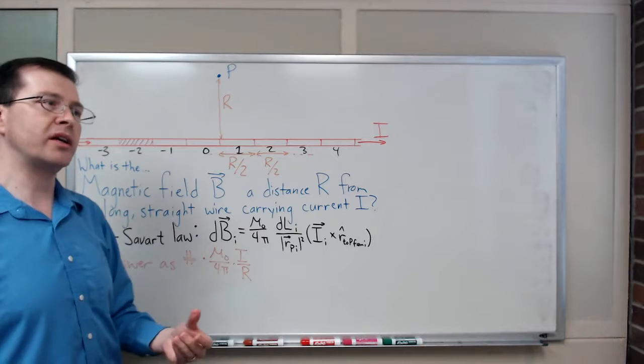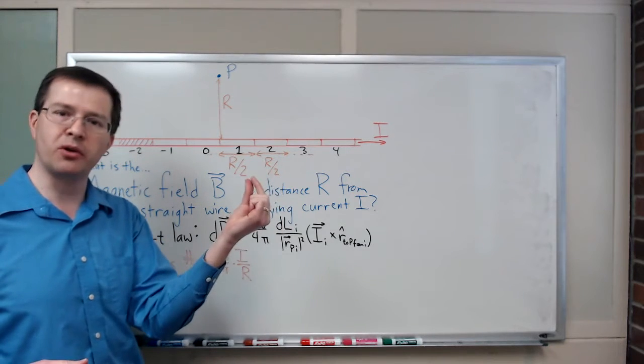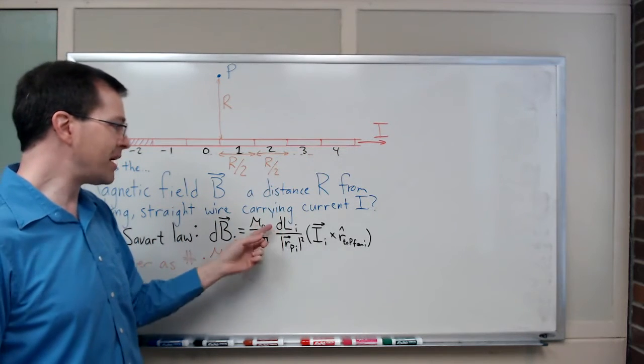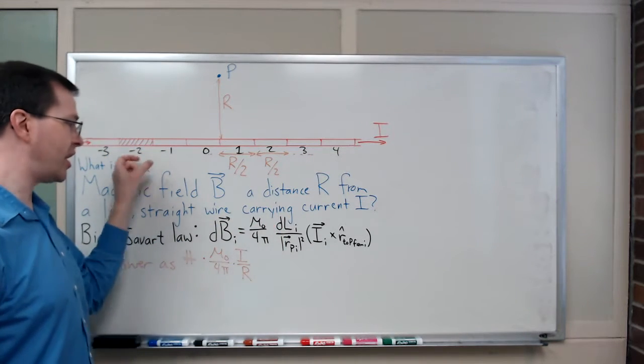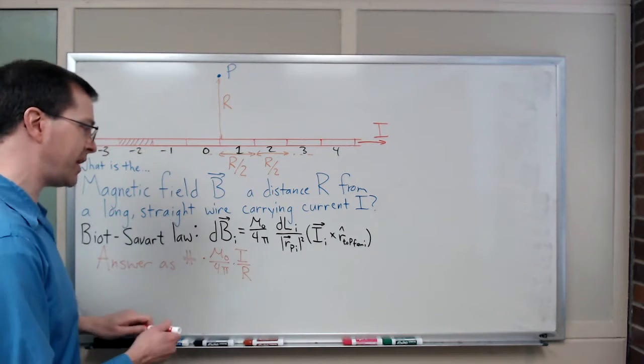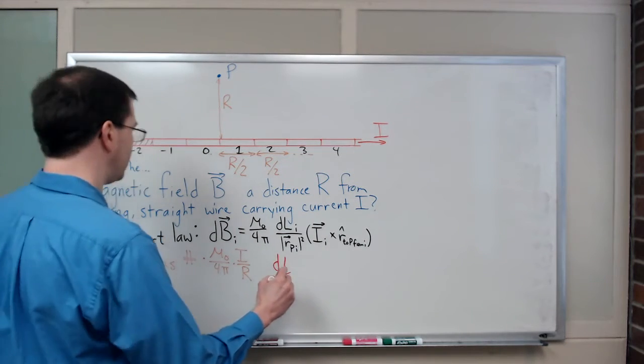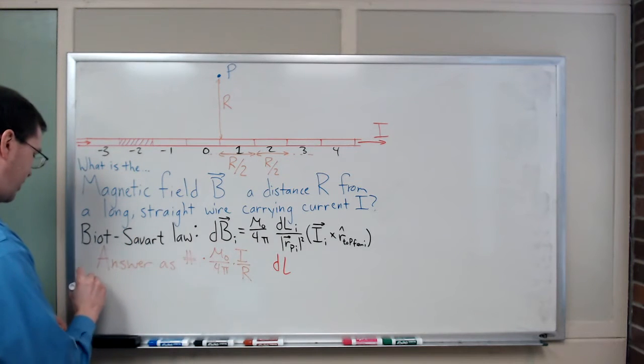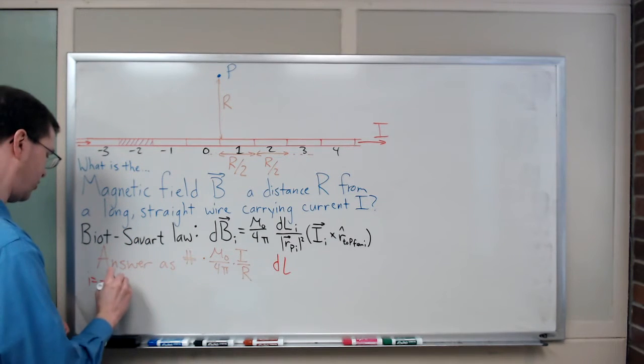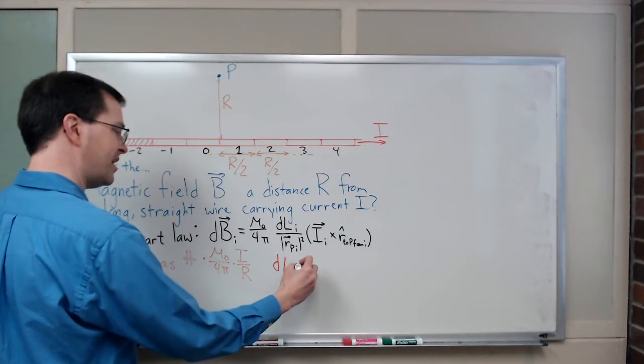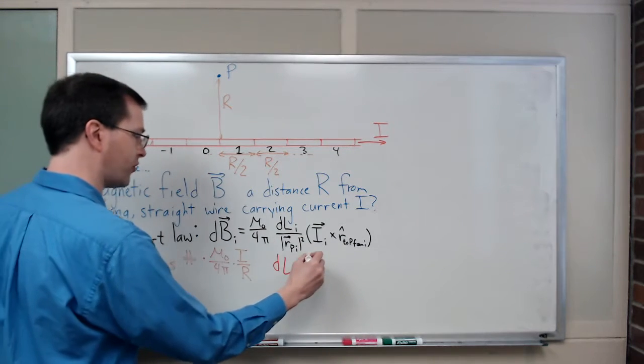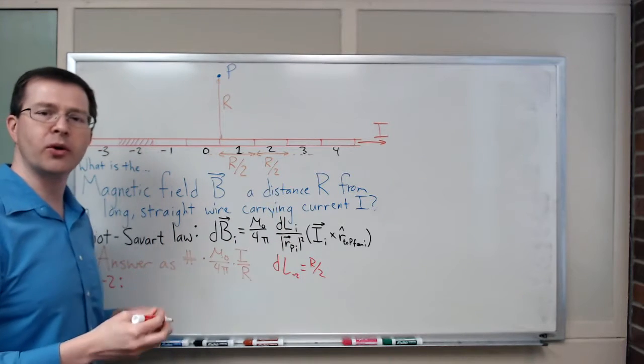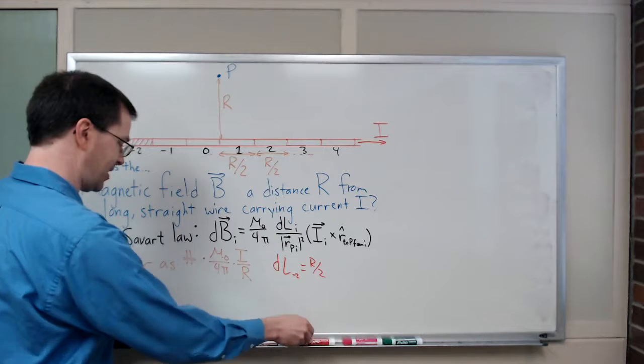DLi is, in calculus speak, an infinitesimal little length. But since I'm breaking this up into these finite size chunks, my DLi is just the length of my little chunk. That DL, I'll make a note of that. My i equals minus 2 is what I'm going to do. My DL minus 2 is R over 2, the length.